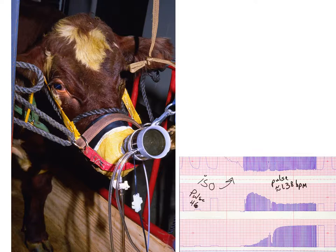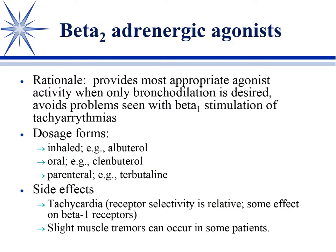I needed to test this apparatus to see if it worked, so I used isoproterenol. The baseline heart rate was 46 and I gave IV isoproterenol. You can see the heart rate increasing - we try to double the heart rate as a valid challenge test, titrating isoproterenol until we double it. I kind of overshoot here, but you can see the drop in resistance and the improvement in compliance is pretty significant. That's an isoproterenol challenge test for asthma and COPD.